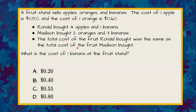Let's go back to our bulleted points. We want to find the cost of one banana at the fruit stand. We know that the fruit Ronald bought is the same cost as the fruit Madison bought. So if we go up to what Ronald bought, he bought four apples and one banana.